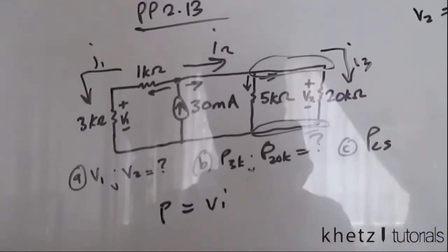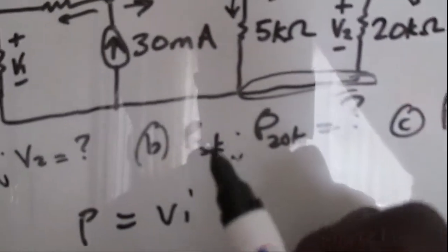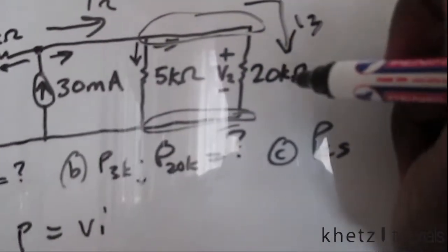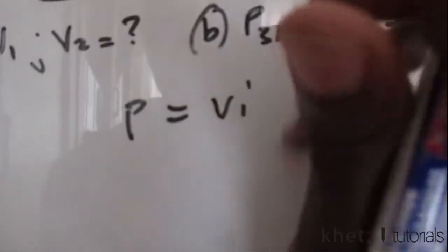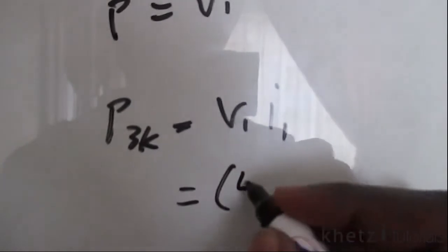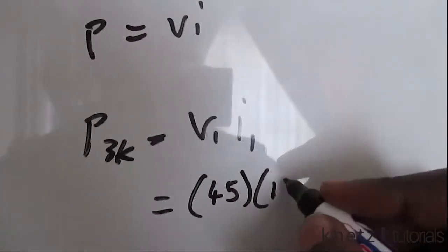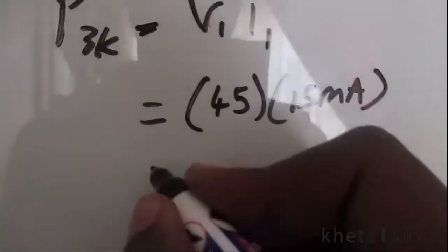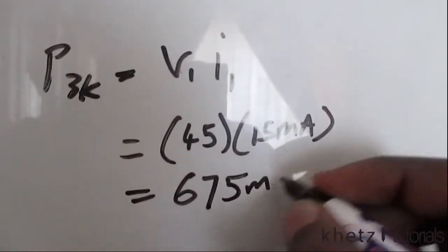We've solved part one: V1 = 45V and V2 = 60V. Now for part two, we find the power dissipated in the 3k resistor and the 20k resistor. Using the power formula P = V × I: P = V1 × i1 = 45 volts × 15 milliamperes, which gives 675 milliwatts.